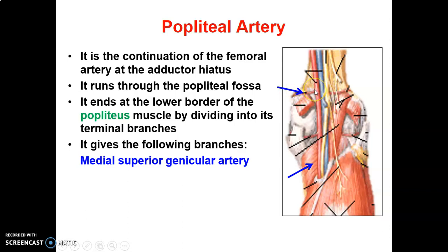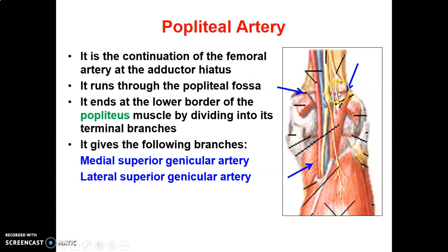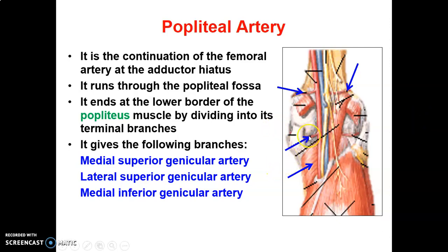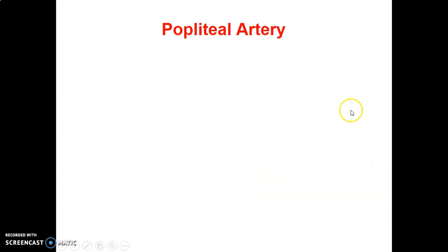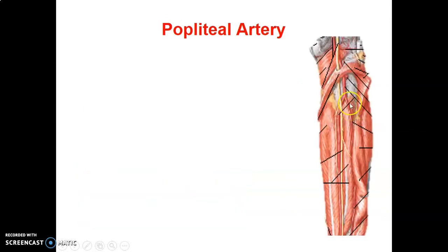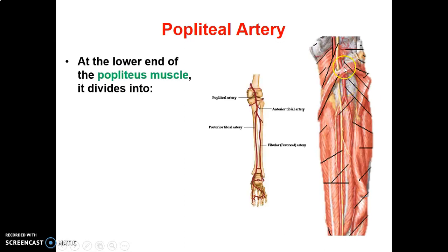The five branches of the popliteal artery are: the superior medial genicular artery, superior lateral genicular artery, inferior medial genicular artery, inferior lateral genicular artery, and finally the middle genicular artery.